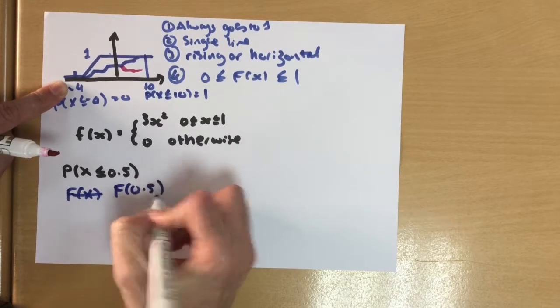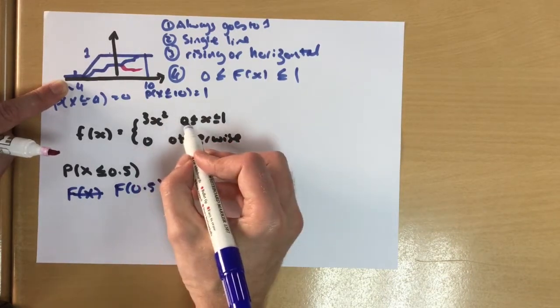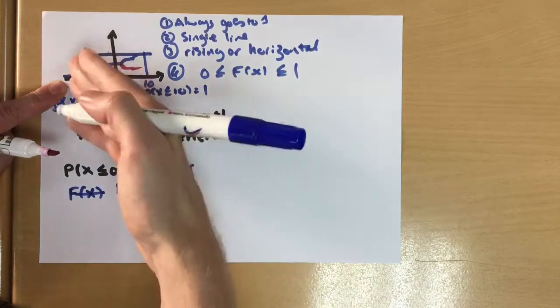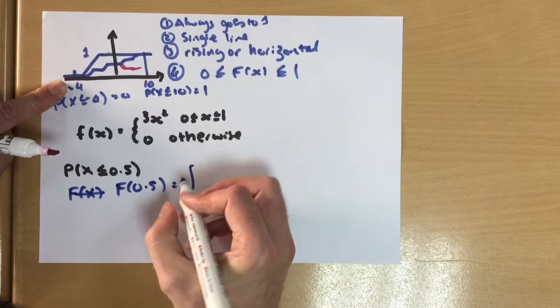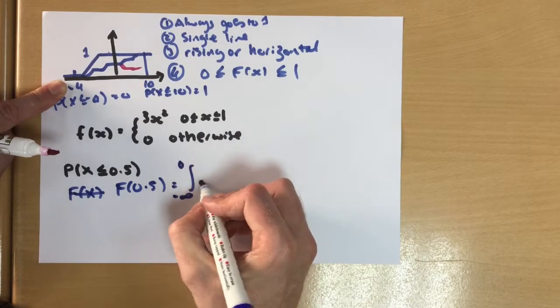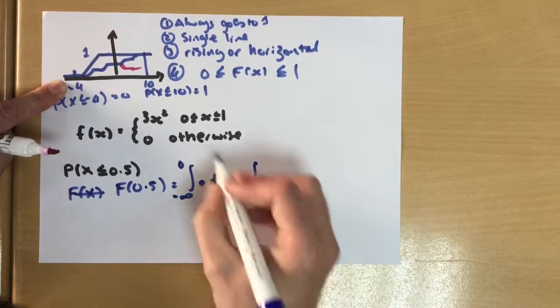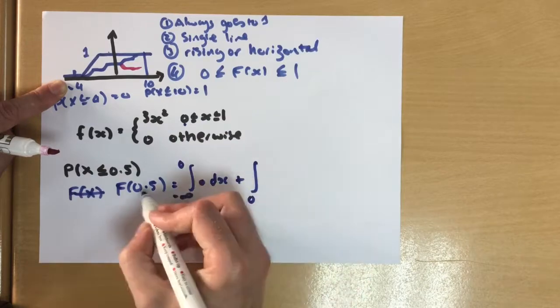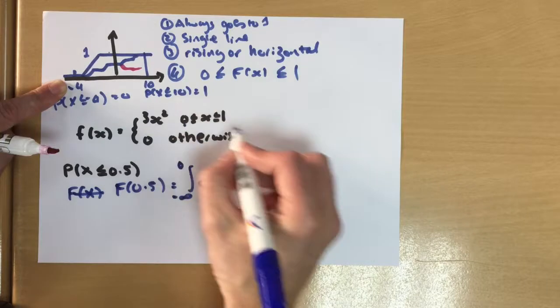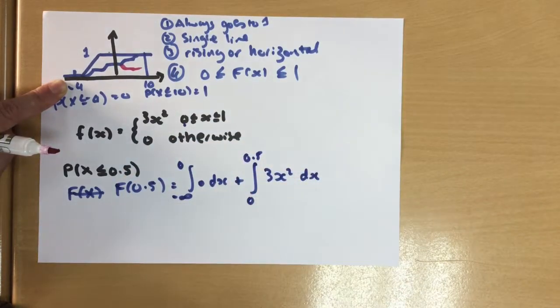So the function of 0.5 is going to be integration. So our values start at zero. So we're going to integrate first everything below that point. So minus infinity to zero, which has no value at all. And we need to add to that the area between zero and 0.5, because we want the cumulative up to that point. And at this range, we're using this particular part of the function.